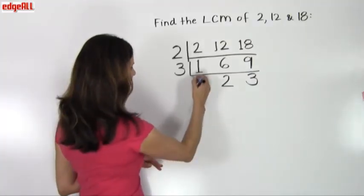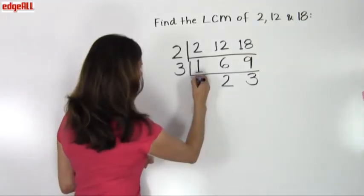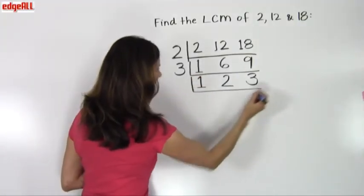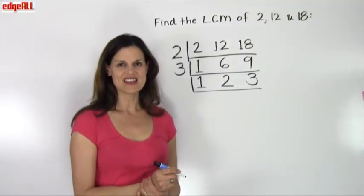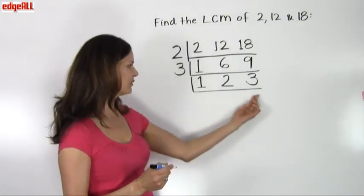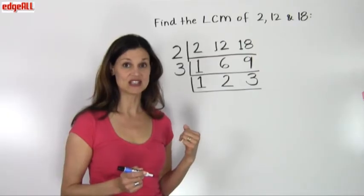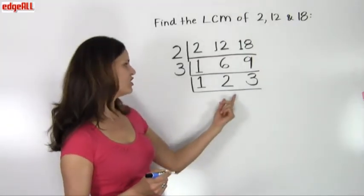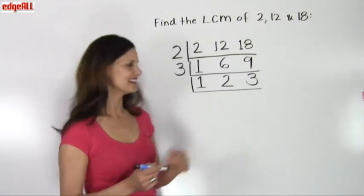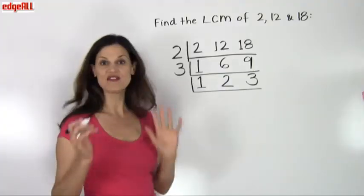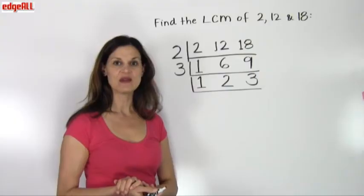Again, I make another bracket and ask myself: is there a number greater than 1 that evenly divides all three numbers? No. Is there a number greater than 1 that evenly divides two of the numbers? No — there's no number greater than 1 that evenly divides both 2 and 3. So that tells me I'm finished and I stop the factoring there.